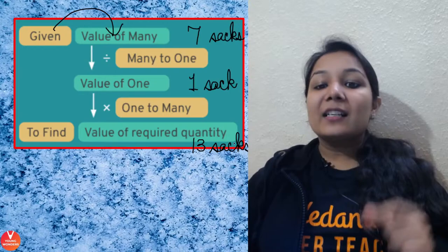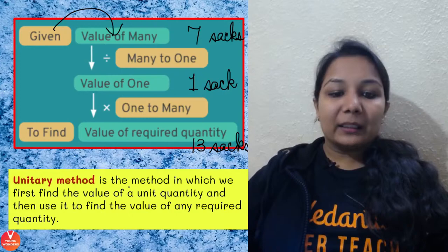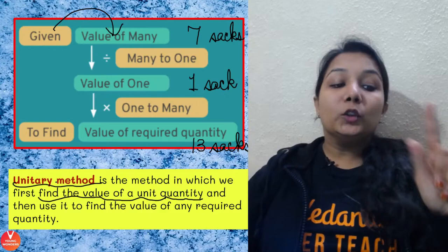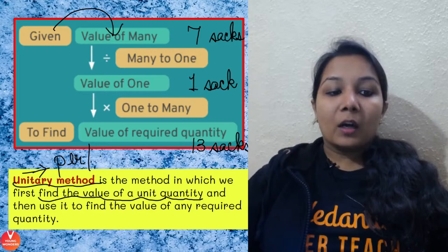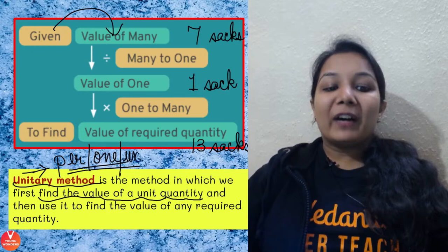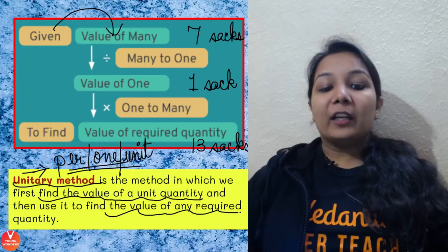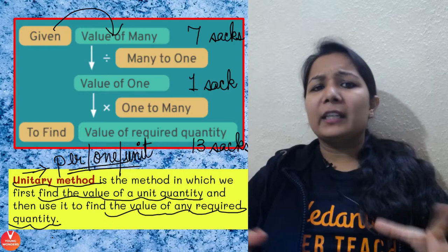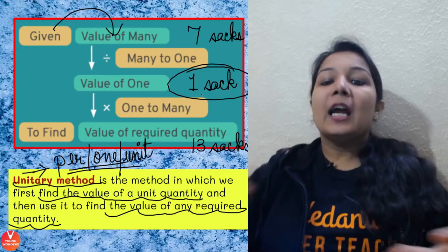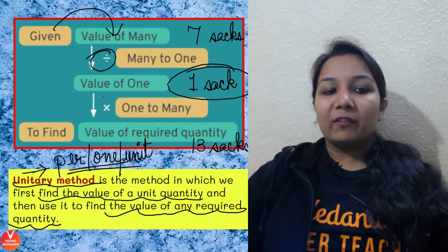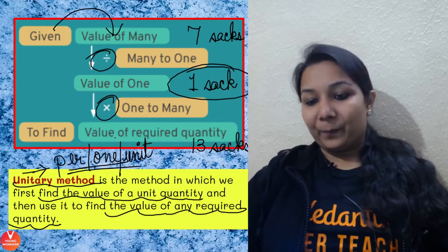The unitary method is the method where we find the value of a unit quantity — 'unit' means one. Different words can be used: 'per', 'each', 'for one'. First find the per-unit cost, then find the value of the required quantity. When going from many to one we divide, and when going from one to many we multiply.